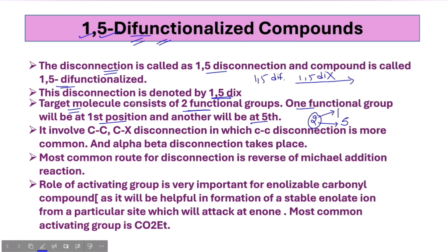Next, we will talk about disconnection. If we talk about the 1,5-Difunctionalized Compound and disconnection, we will break a bond here. You can see a carbon-carbon bond break, and also a carbon-heteroatom bond. When you apply disconnection to the 1,5-Difunctionalized Compound, you will see a carbon-carbon disconnection. This will be an alpha-beta disconnection.